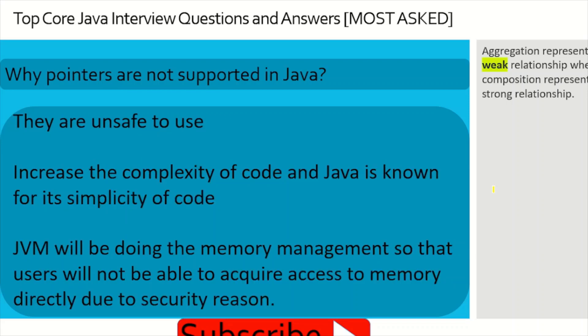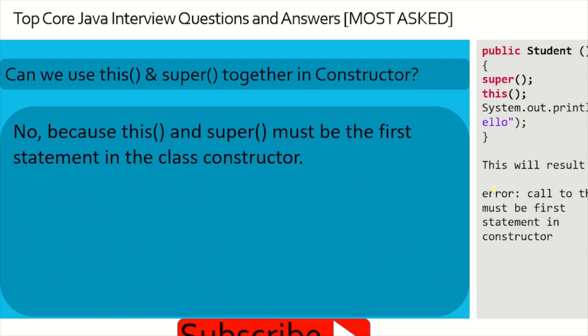Why are pointers not supported in Java? Three reasons: first, pointers are unsafe to use; second, they increase code complexity, contrary to Java's goal of simplicity; third, JVM handles memory management, so users cannot access memory directly, which eliminates security vulnerabilities. These reasons collectively explain why Java chose not to support pointers.